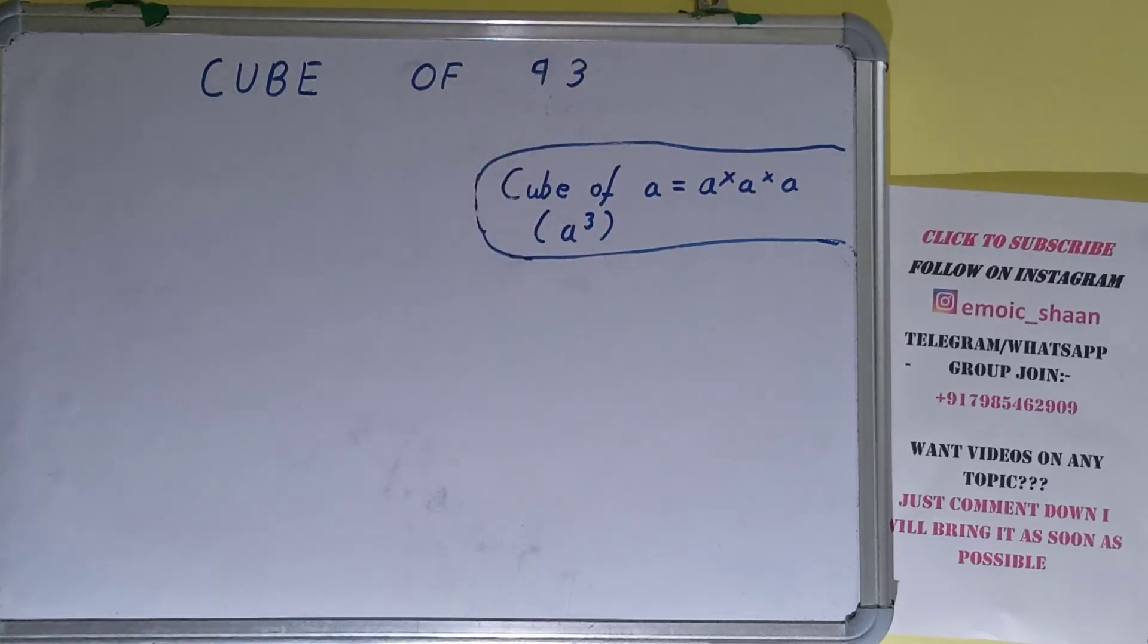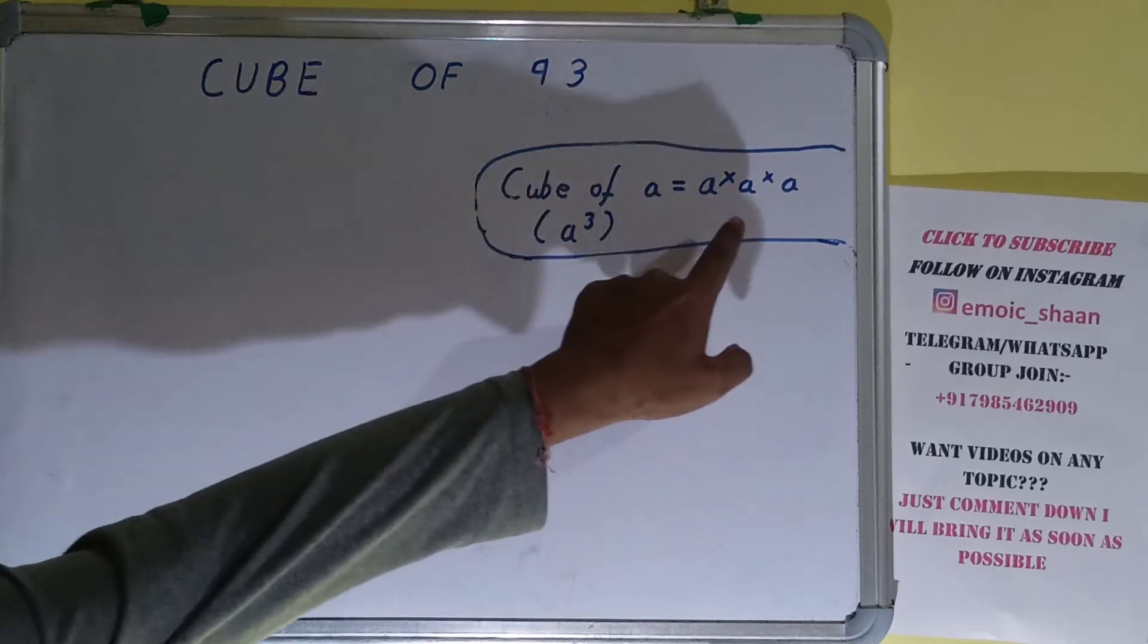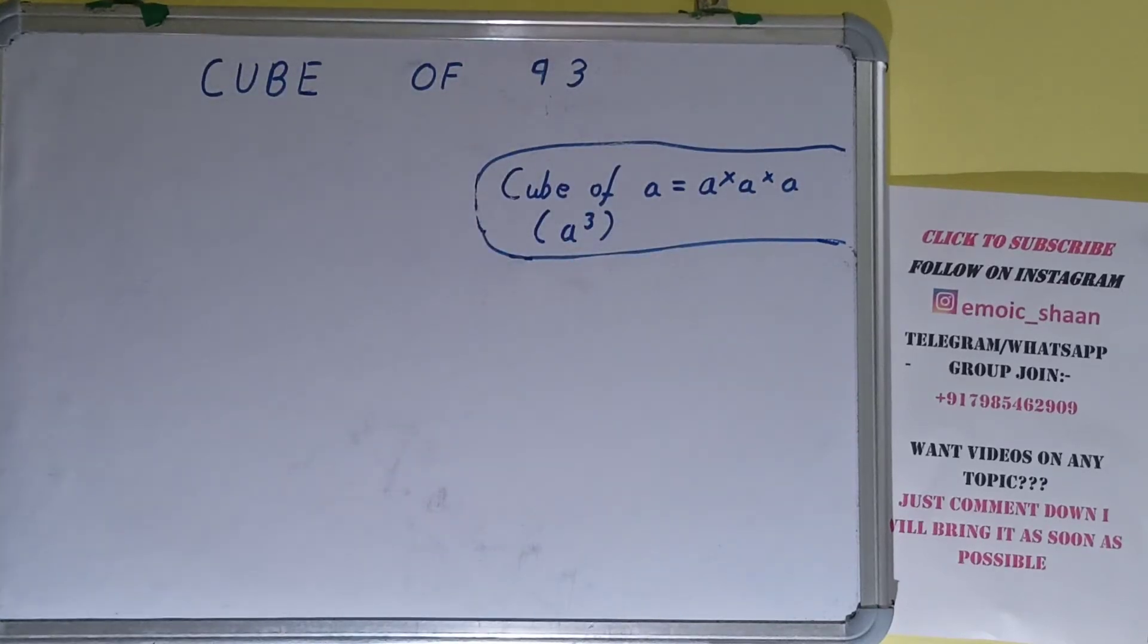Let's say we have to find cube of a, where a is any integer. Then what we need to do is a into a into a. That is how we can get cube of a. One more thing, cube of a can also be written as a³. So that was the general formula.